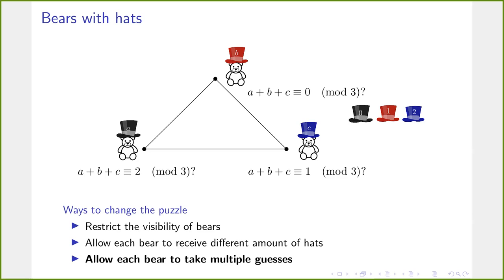There are several ways to change the puzzle. We can restrict the visibility of bears — instead of a triangle, it could be a path on three vertices, so that some bears don't see each other, or it could be an arbitrary more complex graph. We could allow each bear to receive a different number of hat colors. And third, we can allow each bear to take multiple guesses — for instance two — and then the bears win if at least one bear includes the real color of its hat in its guesses.